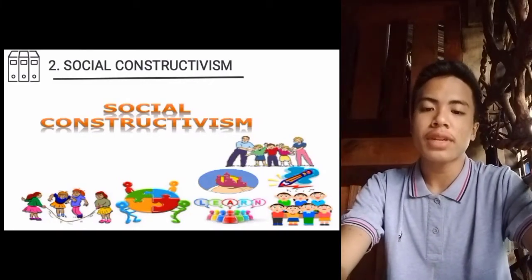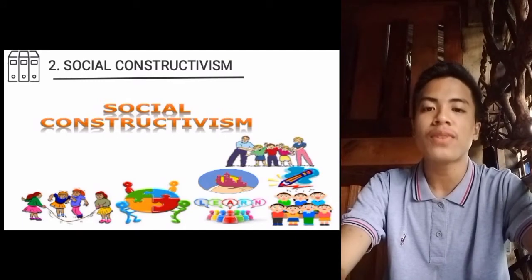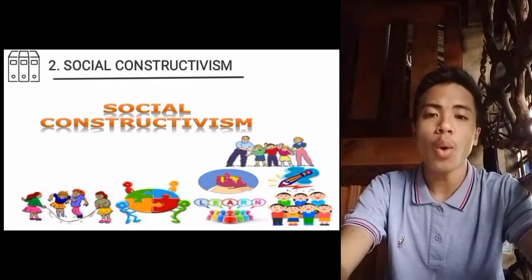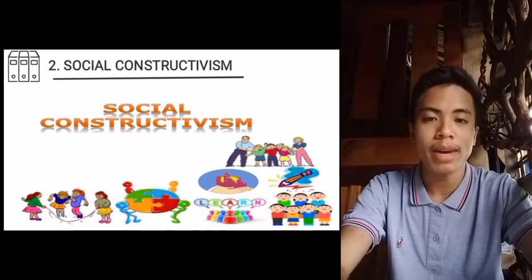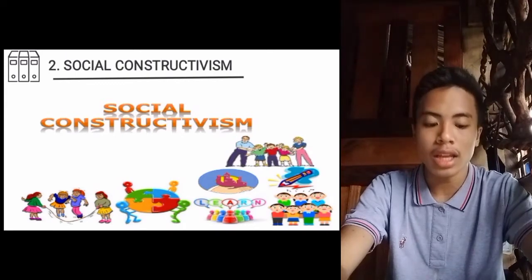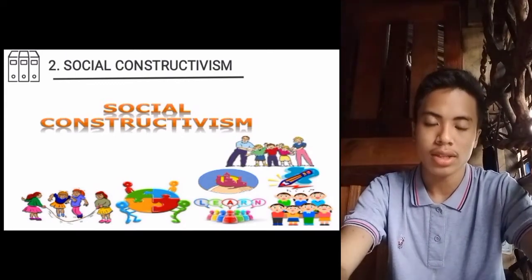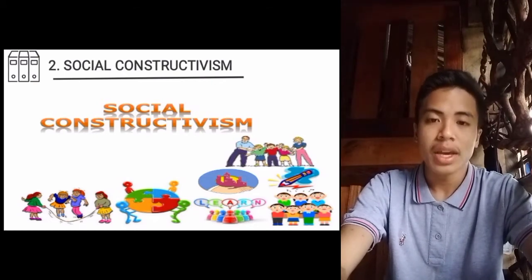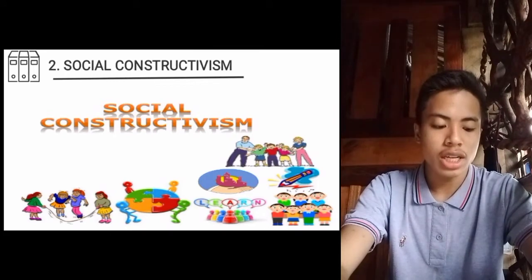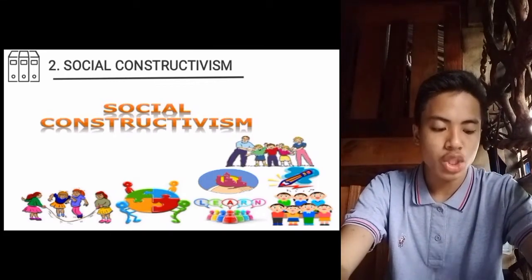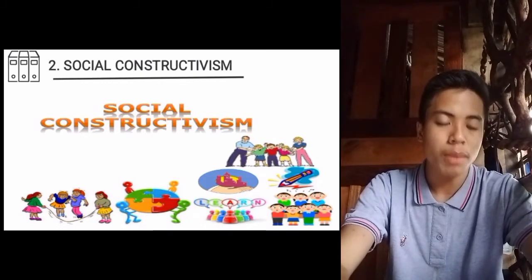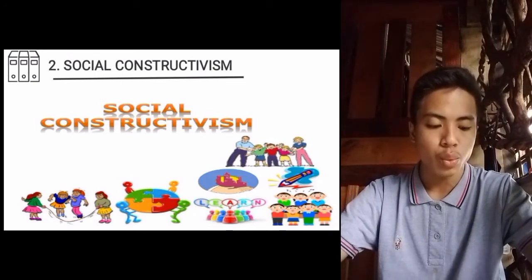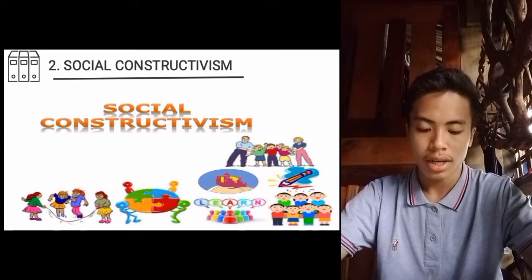The second type of constructivism is social constructivism. This type focuses on the collaborative nature of learning and is a sociological theory of knowledge. According to this view, human development is socially situated and knowledge is constructed through interaction with others. The level of potential development is the level at which learning takes place, comprising cognitive structures still maturing but which can only mature under the guidance or in collaboration with others. Knowledge develops from how people interact with each other, their culture, and society at large.